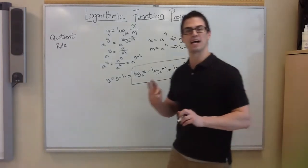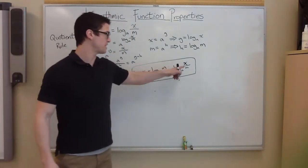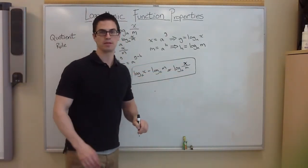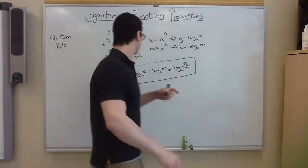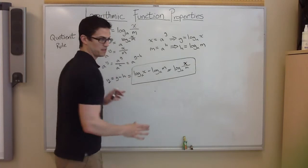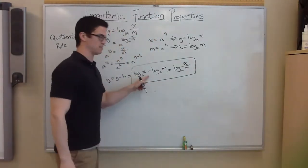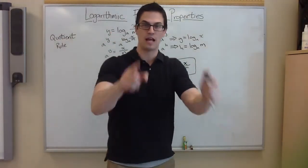This will help simplify logarithmic problems greatly whenever you're dividing, whenever you see this x over m in the problem. Hopefully this helps understand the quotient rule. Remember, all you have to do is understand this. This proof is just how I got to this. Some of you guys are interested in proof, some of you are not. It's not a big deal. The only thing I'm grading you on is this. If you have any questions, let me know.